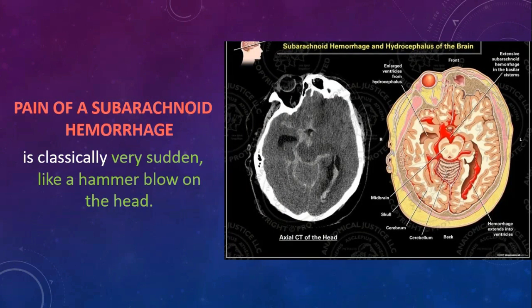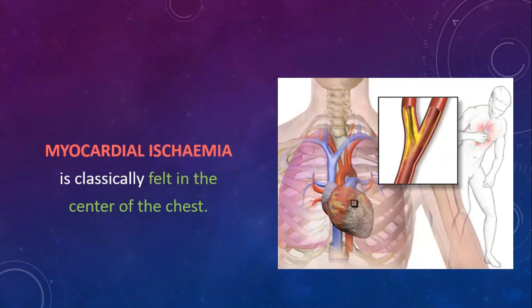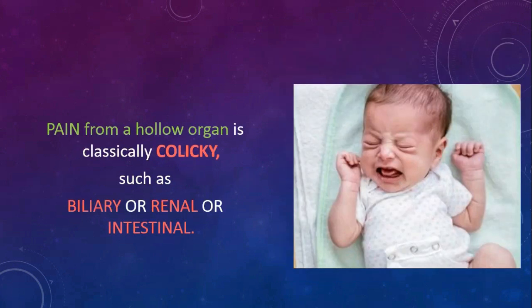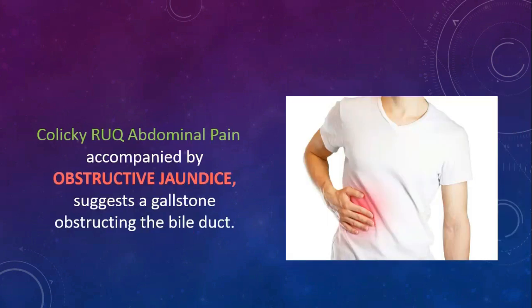Particular gestures are useful in analyzing specific pain symptoms: headache with preceding flashing lights and vomiting suggests migraine; a squeezing gesture describes cardiac pain; hand position describes renal colic; rubbing the sternum describes heartburn; rubbing buttock and thigh describes sciatica; arms clenched around the abdomen describe midgut colic; pain of subarachnoid hemorrhage is classically very sudden like a hammer blow on the head; myocardial ischemia is classically felt in the center of the chest; peptic ulcer pain is classically worse when hungry and better after food; colicky right upper quadrant abdominal pain with obstructive jaundice suggests a gallstone obstructing the bile duct. Thank you.